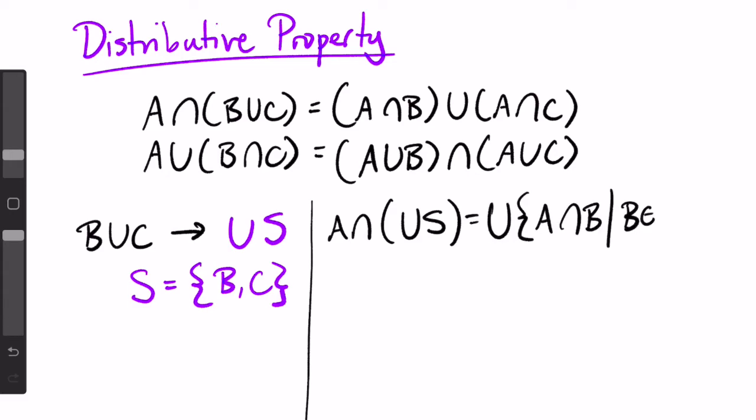And the union version would be A union (intersection S) equals intersection of the set of all A union B such that B is in S.